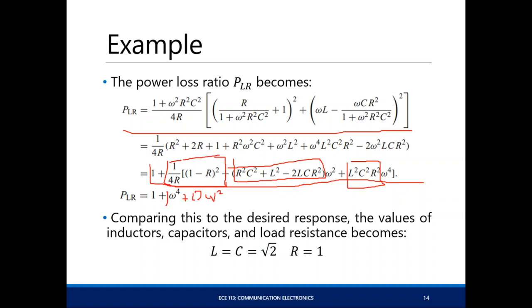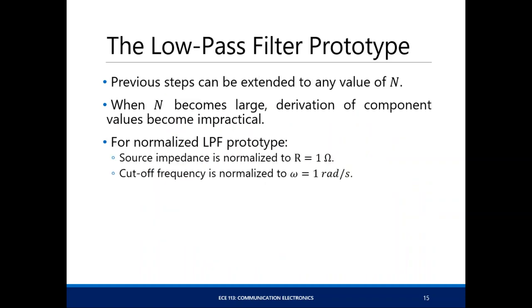By comparing all those values, the load resistance should equal 1, and your L and C should both equal √2. This is now what we call the low-pass filter prototype for your second-order Butterworth filter. You can extend that to any value of n, but when n becomes large enough, the derivation becomes impractical because you have a lot of elements.